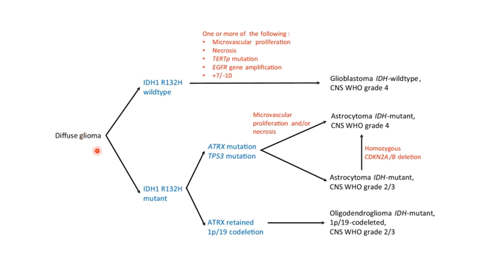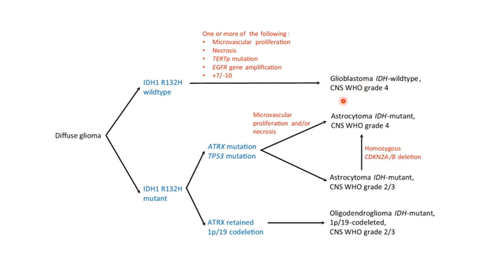Diffuse gliomas can either be IDH wild type or IDH mutant. IDH1R132H is the most commonly considered mutation since IHC is available. If IDH1R132H wild type with one or more of: microvascular proliferation, necrosis, TERT promoter mutation, EGFR gene amplification, or gain of chromosome 7/loss of chromosome 10, then the tumor is upgraded to glioblastoma IDH wild type CNS-WHO grade 4. Any diffuse glioma which is IDH wild type harboring any one of these criteria qualifies as glioblastoma CNS-WHO grade 4.